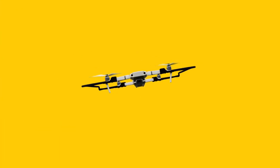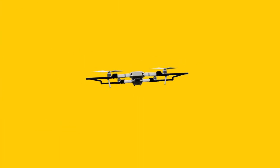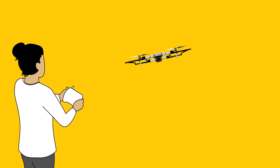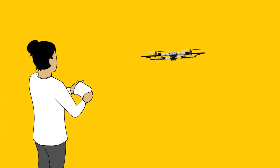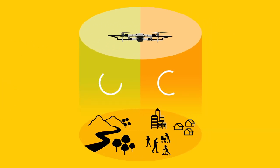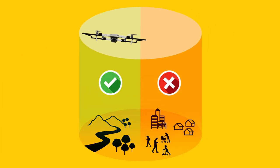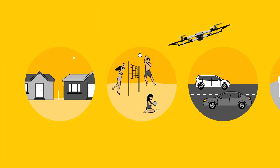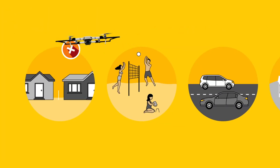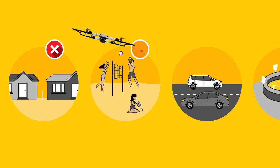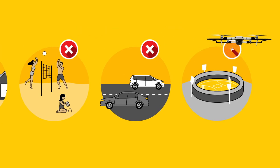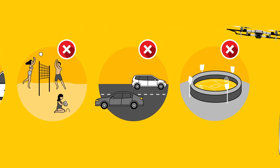You must fly your drone in an open and uninhabited space away from populous areas. A populous area is any location where people are living or gathered for a purpose. For example, neighbouring houses, crowded beaches, busy roads and events are all populous areas.